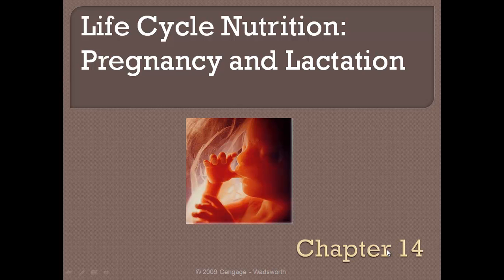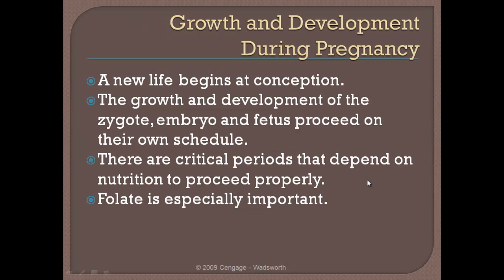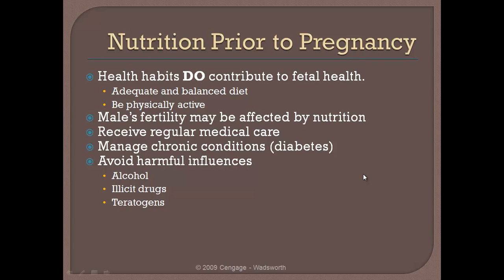I like to make an analogy about a construction site and the body. Daily we have millions — maybe even billions — of cells being formed, and for those cells to form, appropriate building materials must be present. In our case, those are vitamins, minerals, amino acids, and essential fatty acids. On a construction site, you need things like cinder blocks, mortar, brick, lumber, screws, nails, drywall, carpet, and windows — all the building materials needed to build a house appropriately.